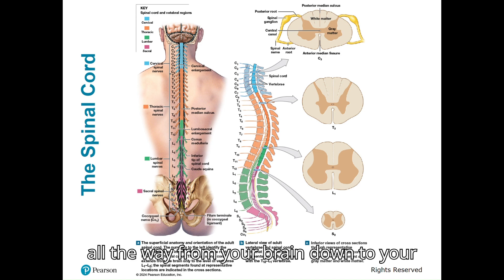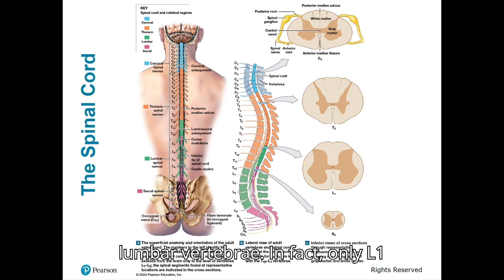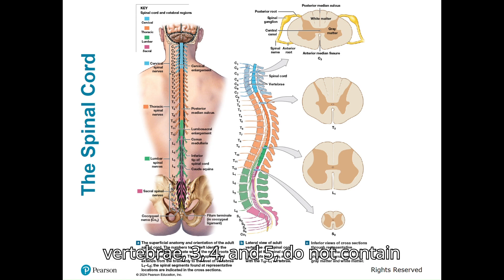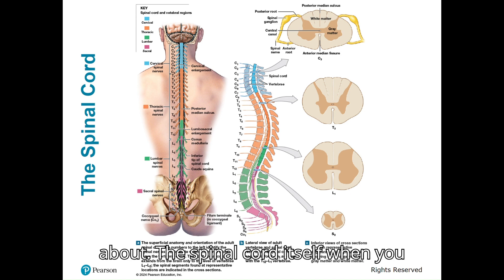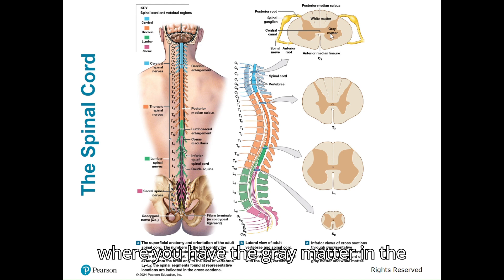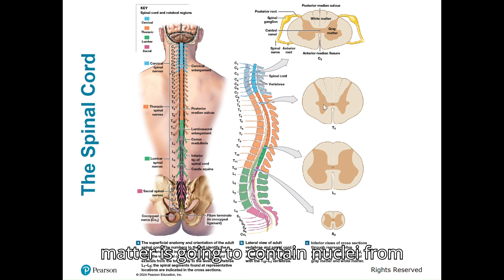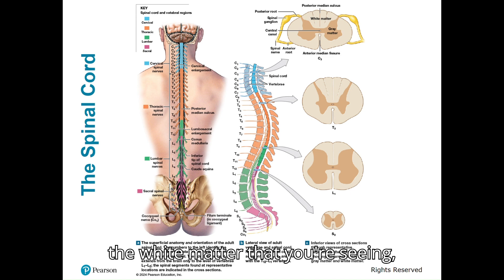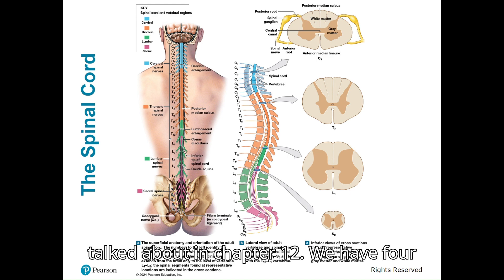The spinal cord extends all the way from your brain down to your lumbar vertebrae — only to about L1 or L2. The lower vertebrae, L3, L4, and L5, do not contain the spinal cord, though there are nerves there that we will talk about. When you look at a cross-section of the spinal cord, you will see both gray matter and then white matter surrounding it. It has a classic butterfly shape where you have the gray matter in the center and the white matter surrounding it. The gray matter contains nuclei from the cell bodies of the neurons, and the white matter consists of the myelinated axons we talked about in Chapter 12.